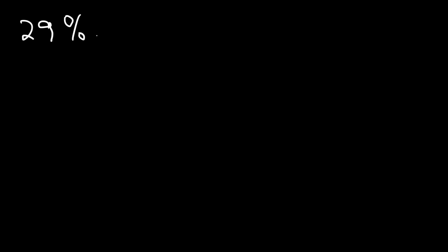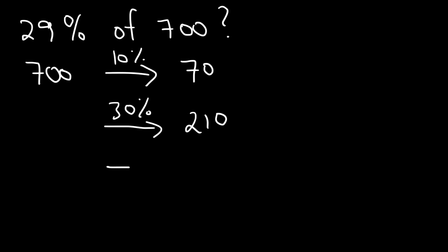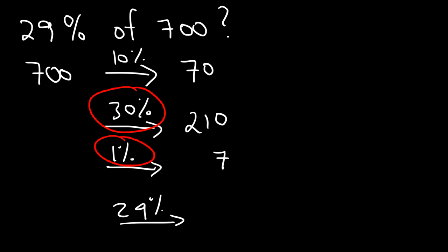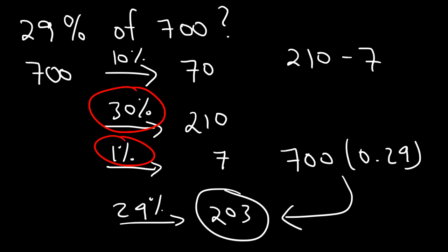Here's another one for those who want to master this topic. Go ahead and find 29% of 700. Let's start with 10%: 10% of 700 is 70. So 30% of 700 is 3 times 70, which is 210. And 1% of 700 is 7. To find 29%, we take the difference between 30% and 1%: 30 minus 1 is 29. So we subtract 7 from 210, which gives 203. So 203 is 29% of 700. 700 times 0.29 is 203.